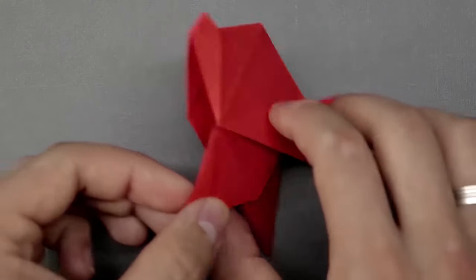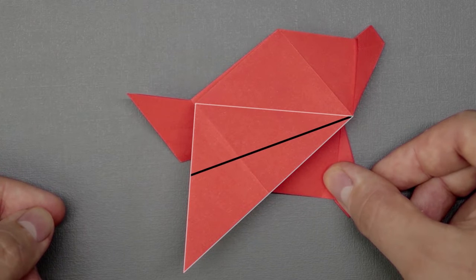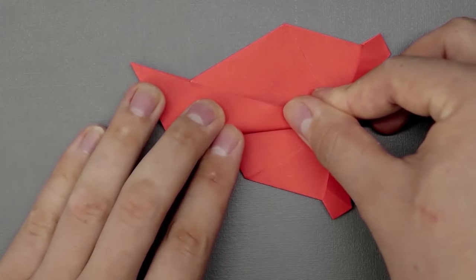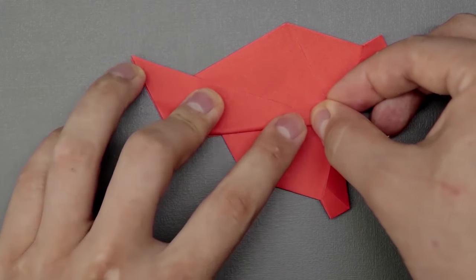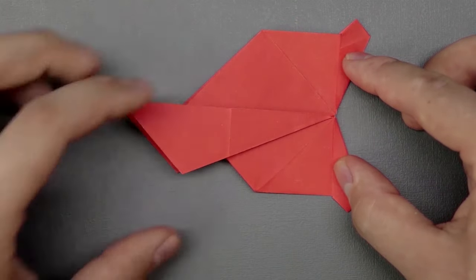Now on the other side, let's keep the flap down and then fold in half diagonally. Just bring the diagonal edge to the middle and bring it up.